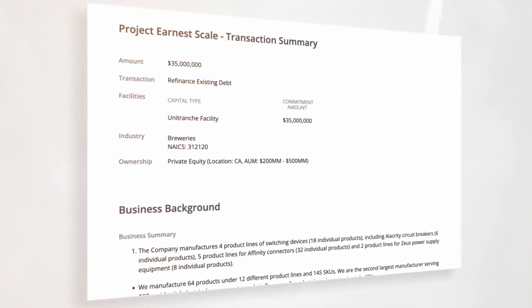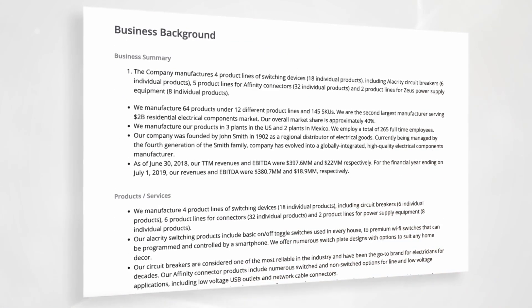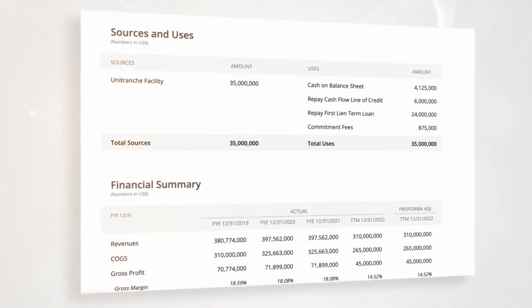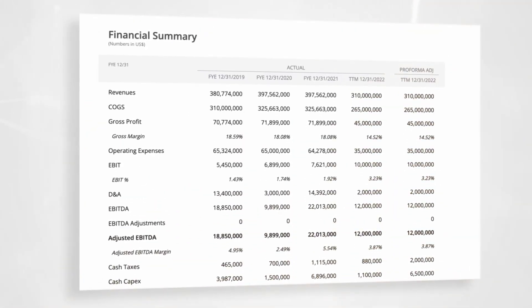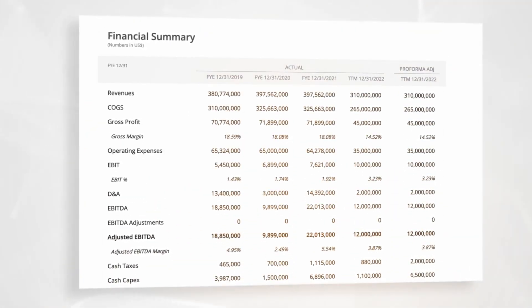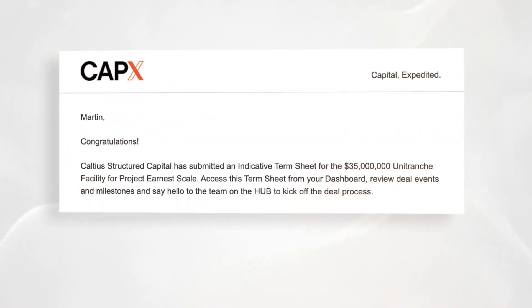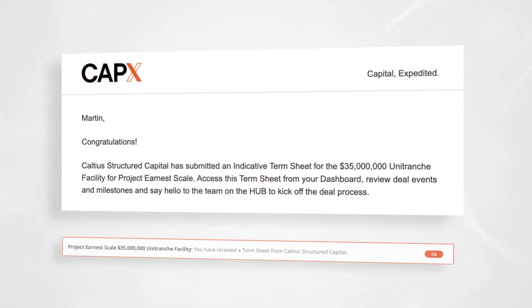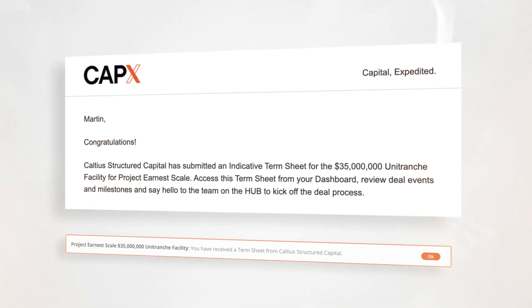Once notified, lenders will review your credit memo and approve or decline your transaction quickly, without the need for a single phone call. Within days, you will start receiving email notifications as lenders send you term sheets.